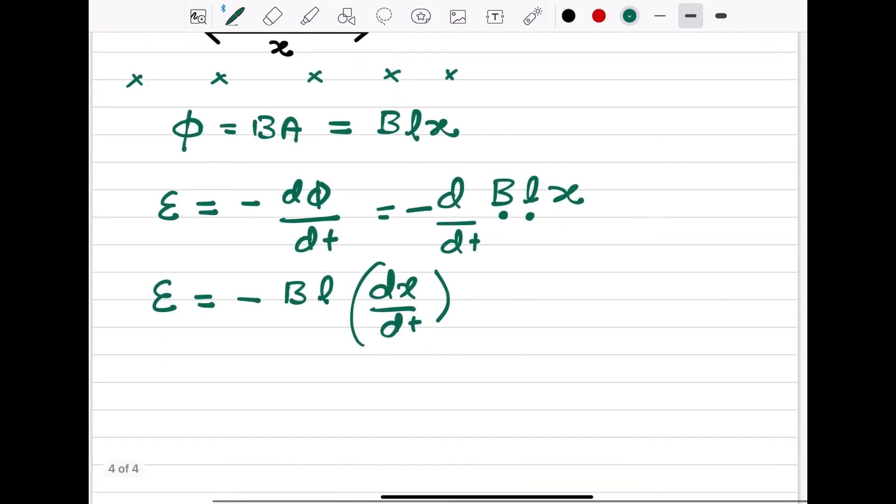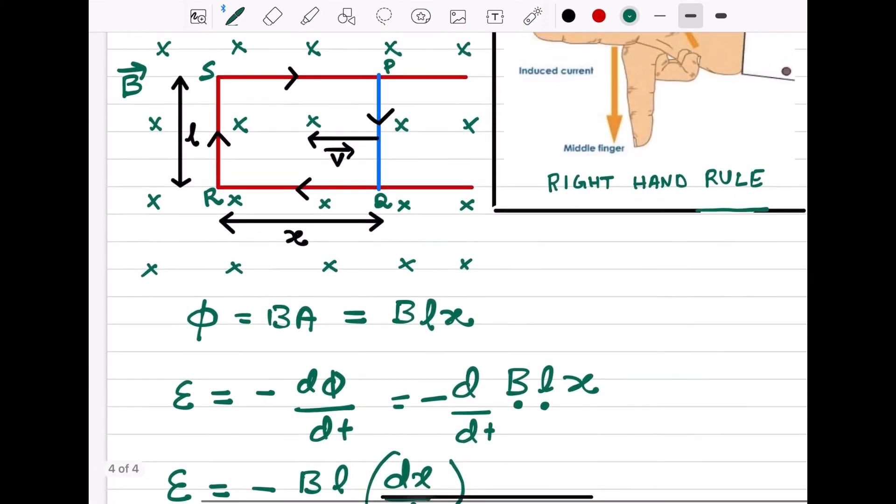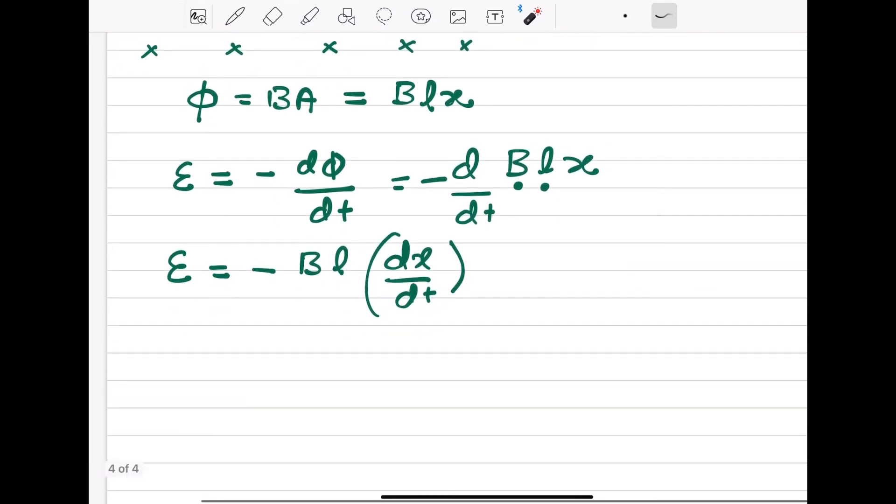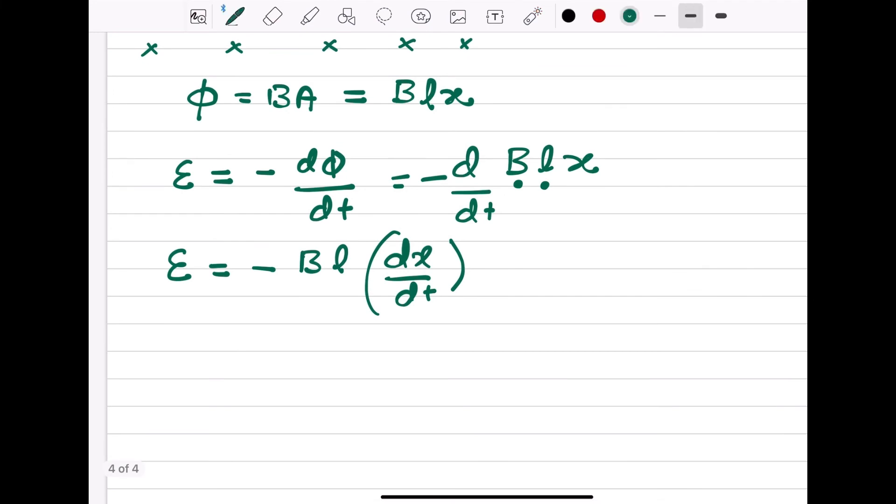E is equal to minus BL into dX by dt. Now, what we can observe is, since this X is decreasing, dX by dt can be written as minus V because displacement is decreasing. E is equal to therefore minus BL into minus V. Actually dX by dt is equal to V, but since X is decreasing, we are taking minus V or magnitude of induced EMF is equal to BLV.